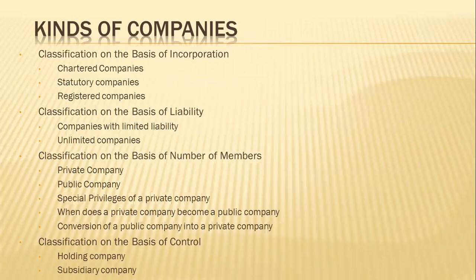Let us understand what we mean by chartered companies. The Crown, in the exercise of the royal prerogative, has power to create corporations by the grant of a charter to persons assenting to be incorporated. Such companies or corporations are known as chartered companies. Examples of this type are the Bank of England, the East India Company, etc. The powers and the nature of business of a chartered company are defined by the charter which incorporates it.